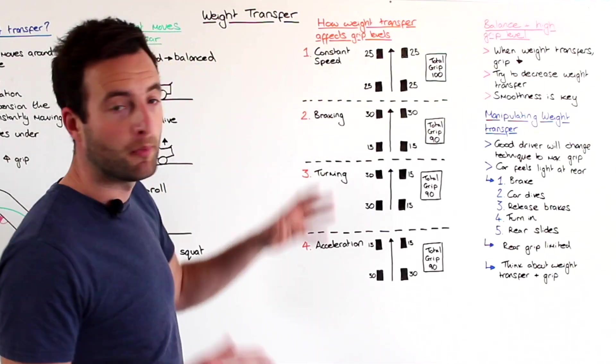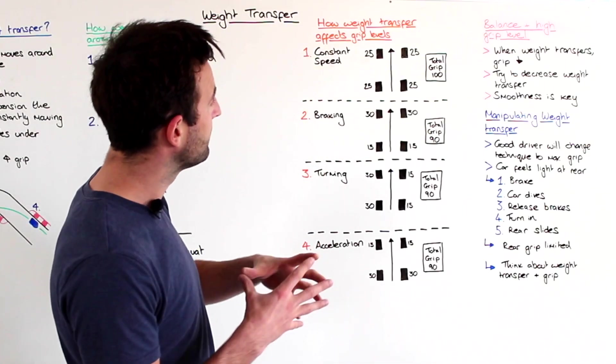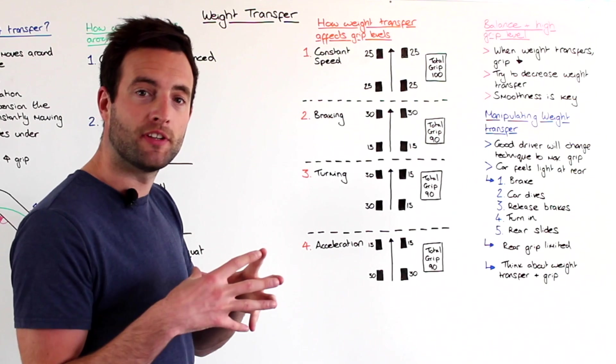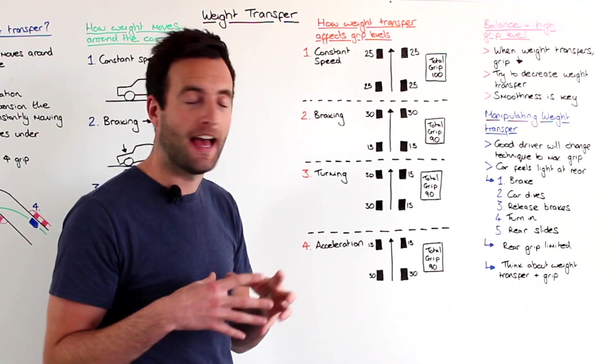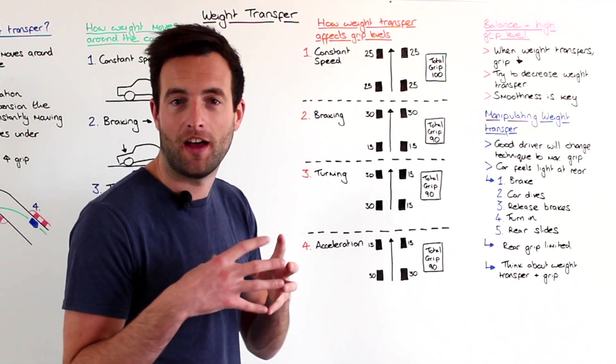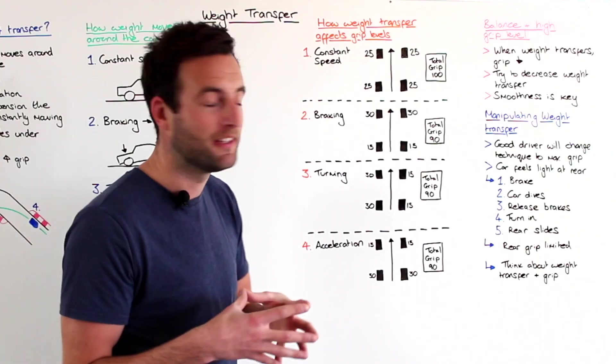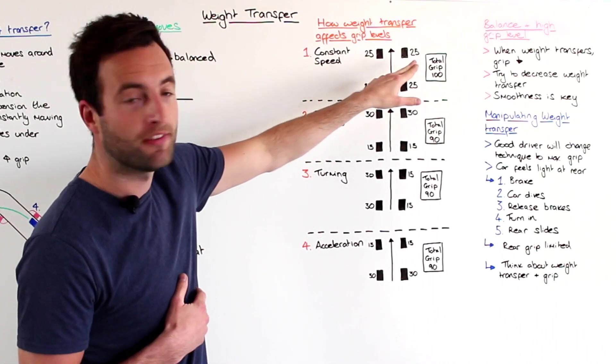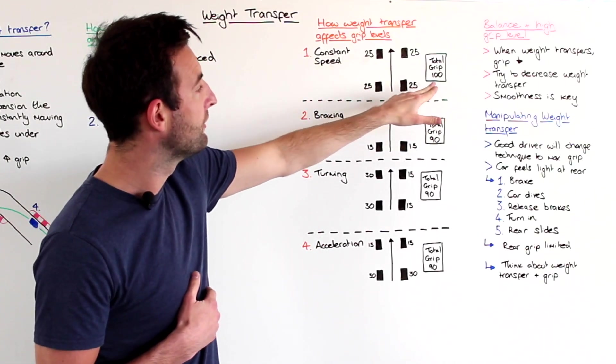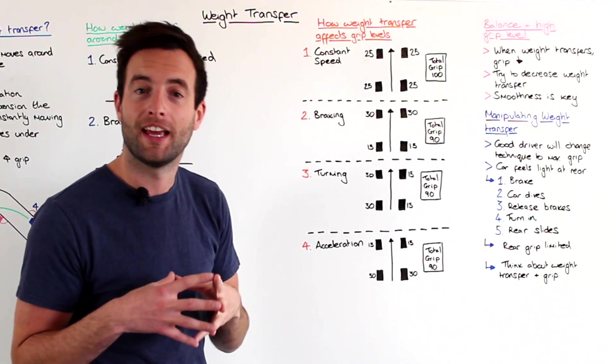So point one, we're arriving at the corner again at a constant speed. And what we've done here is we've given each tire a level of grip, a grip unit, if you will. So each tire has 25 grip units. And the total grip at this point is 100.